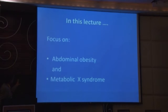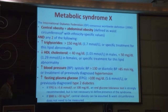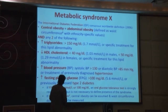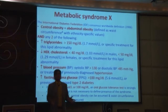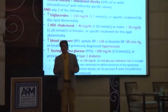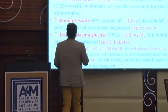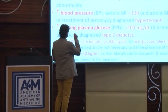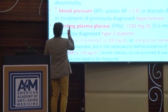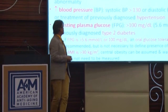This lecture focuses on abdominal obesity and metabolic X syndrome, and on the hormone deficiencies behind them. In scientific studies, central obesity is the same as abdominal obesity. Metabolic syndrome X is characterized by abdominal obesity and higher amounts of triglycerides — above 150 milligrams per deciliter.